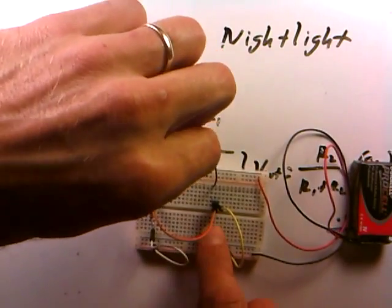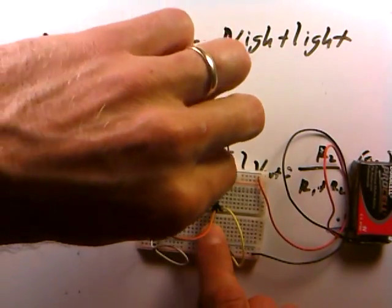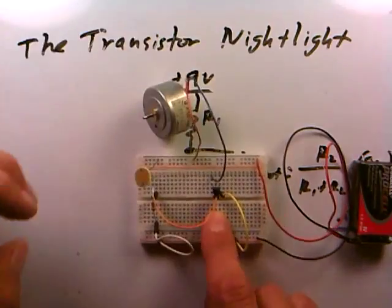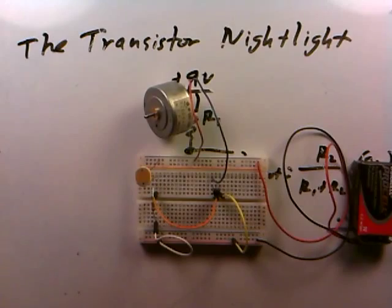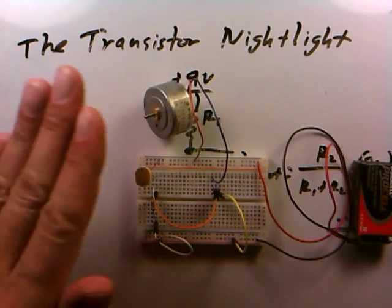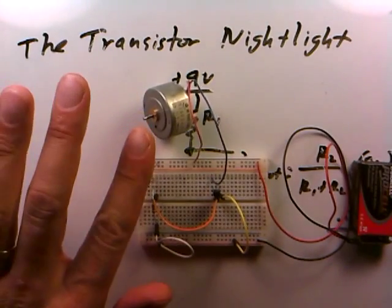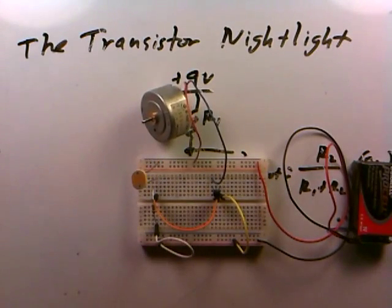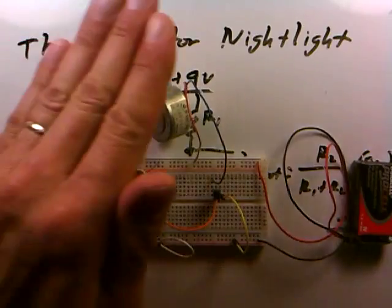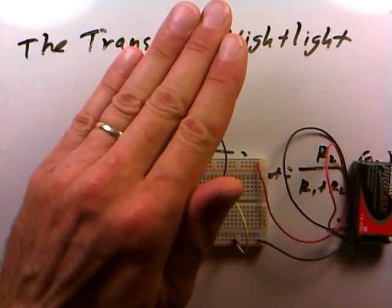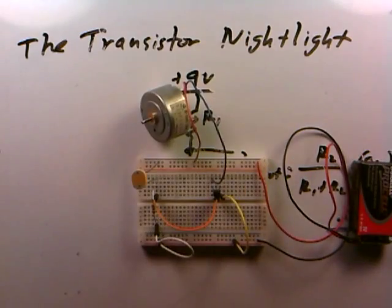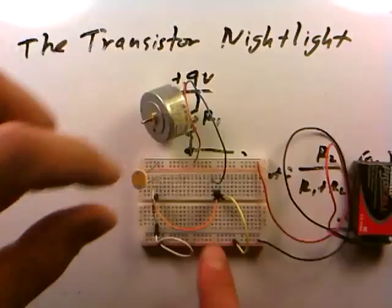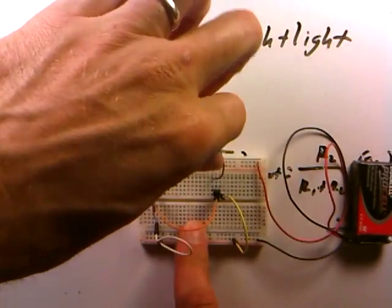We could do something with a motor here. The motor is on — I don't know if you can hear it but it's definitely spinning. And it's off. And it's on. And it's off — all depending on light levels in the room, all thanks to our transistor.